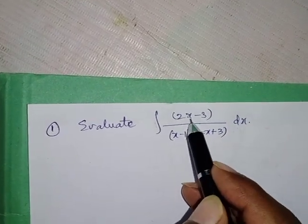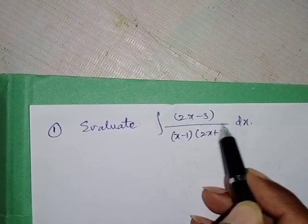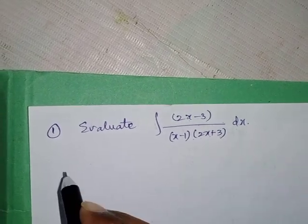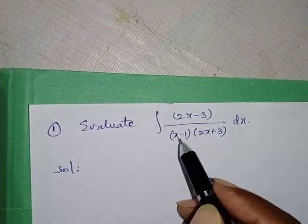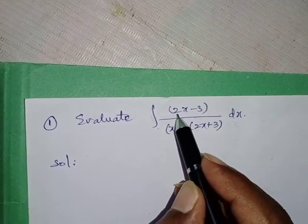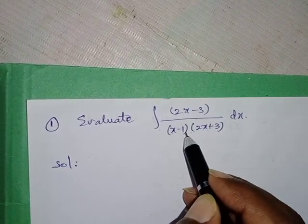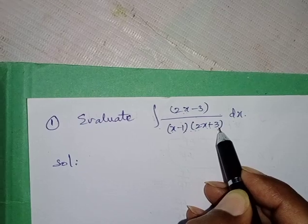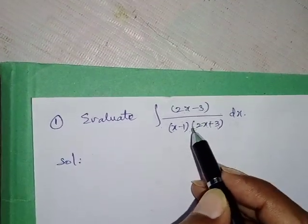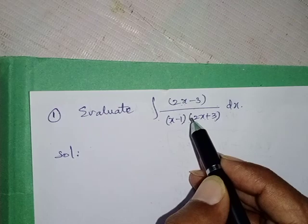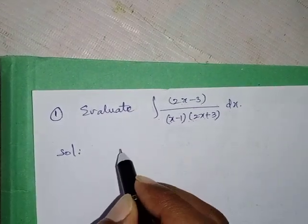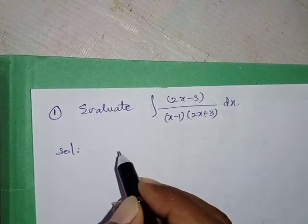Evaluate the integral of (2x minus 3) upon (x minus 1) into (2x plus 3) dx. To solve this, we have to first apply partial fractions without considering the integral symbol.